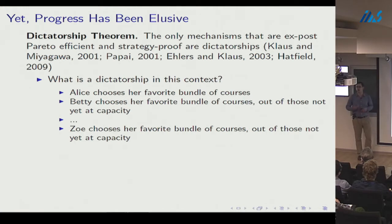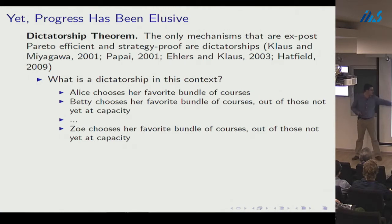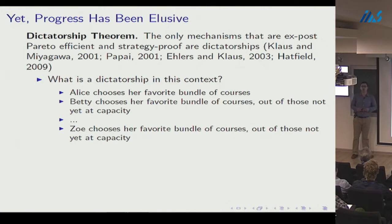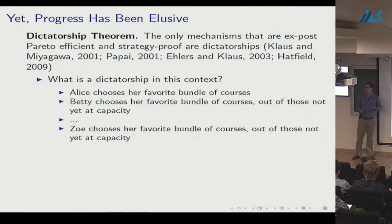It's easy to see this is strategy-proof: when it's your turn, reporting truthfully gets you the best available bundle. It's also ex post Pareto efficient: Zoe wants to trade with Alice, but Alice has no reason to trade with anyone below her in the order, so no Pareto-improving trades remain. However, with no monetary transfers, the mechanism will be ex post unfair to Zoe.